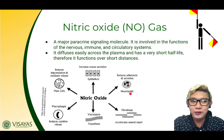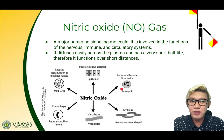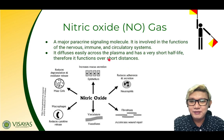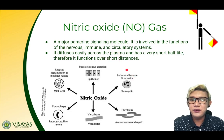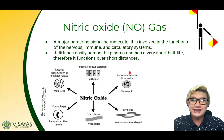A common example is nitric oxide, or NO gas. This is a major paracrine signaling molecule, and it's involved in the functions of the nervous, immune, and circulatory system. It diffuses easily across the plasma membrane and has a very short life. Therefore, it functions over short distances.